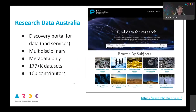Research Data Australia has been around for some time — it was launched in 2009 and it's a discovery portal for finding data and services. The search is mostly focused around data, but for context we also provide information and links to the services that might provide or be connected to that data. It's a multi-disciplinary search portal, so the metadata we collect and the searches you can do really reflect that multi-disciplinary nature.